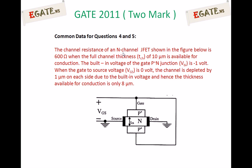Look at the diagram of the n-channel JFET. The channel resistance is 600 ohms when the full channel thickness of 10 micrometers is available. When the channel thickness T is 10 micrometers, the channel resistance is 600 ohms. When we apply Vgs of 0 volts, there is a small built-in voltage across the PN junction.